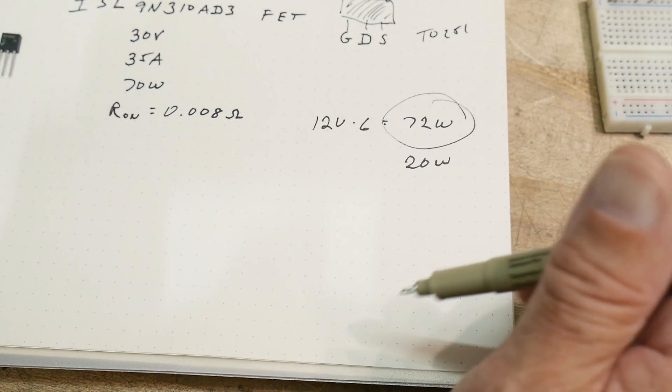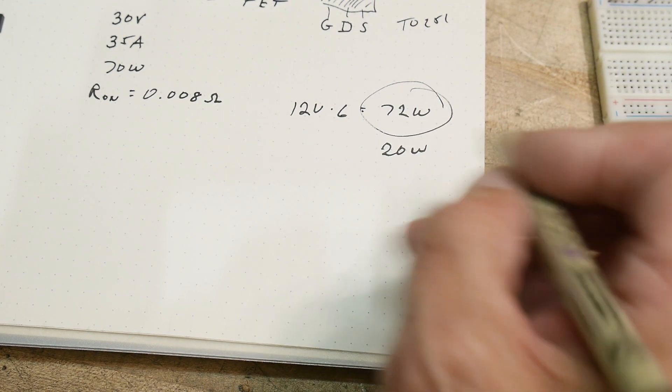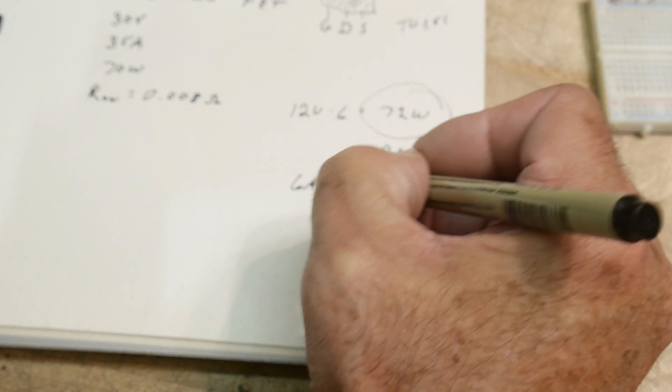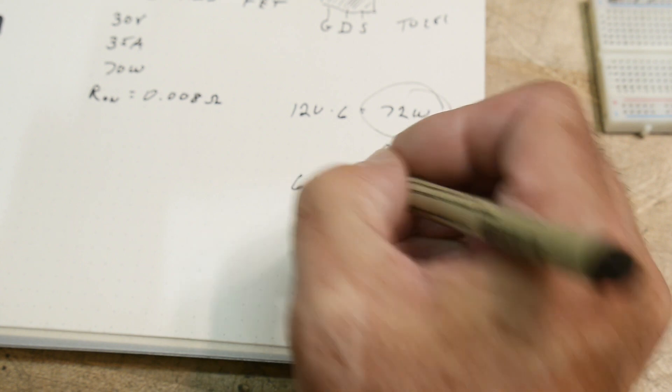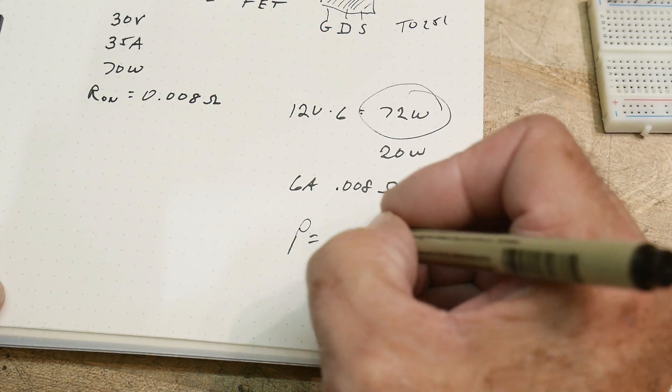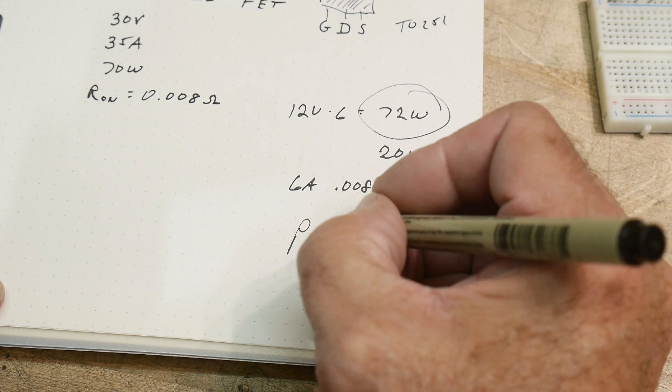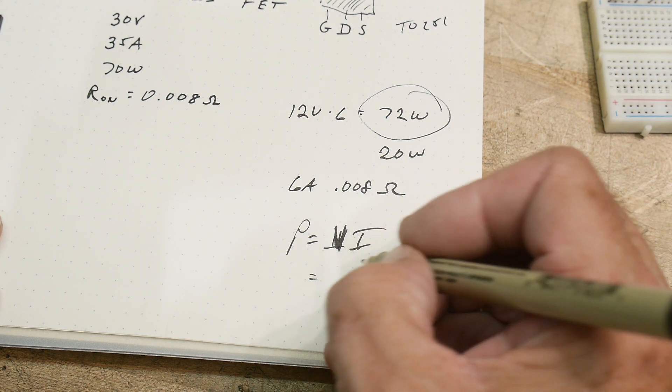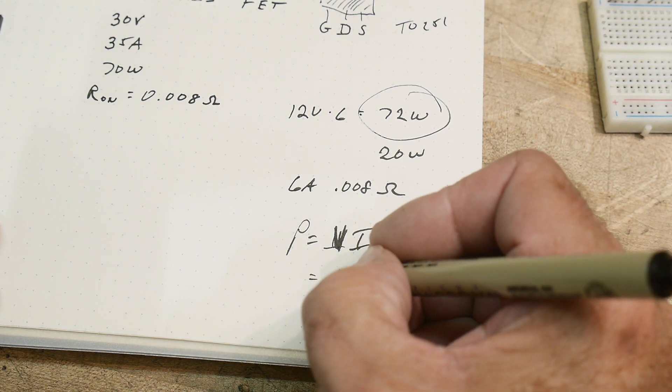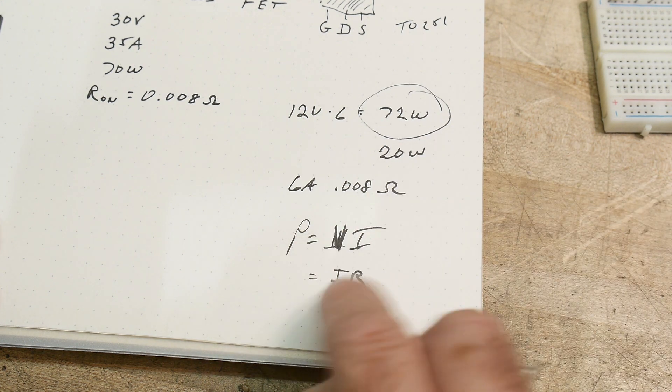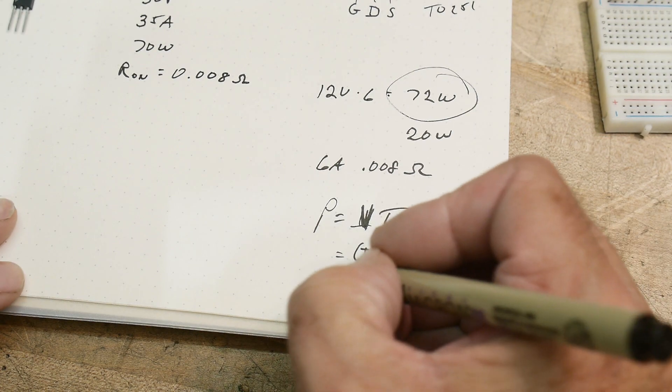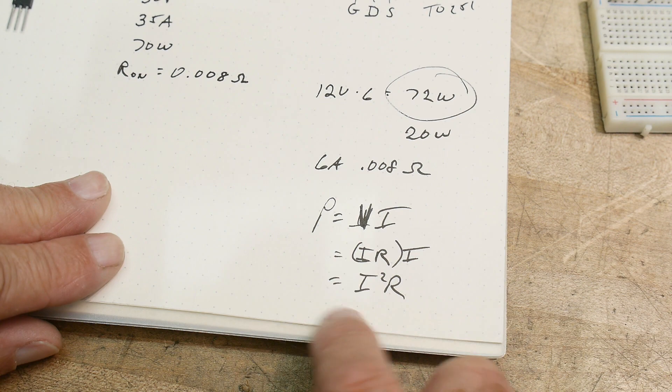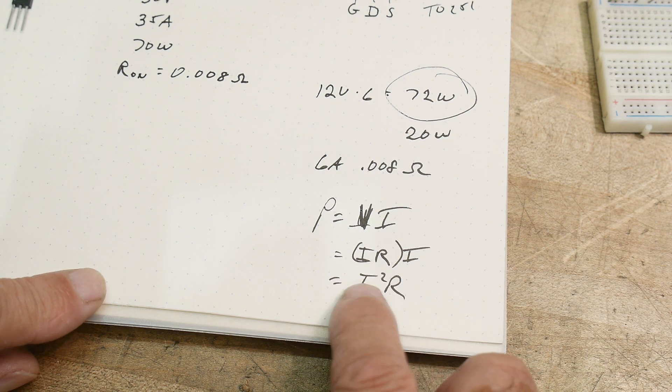Now let's talk about the actual device though. We had six amps. Okay. Six amps. So we had 0.008 ohms. Okay. So power equals voltage times current. Okay. But voltage is IR times another I. You get I squared R. Okay. So the formula for power, if all you know is current and resistance is I squared R.